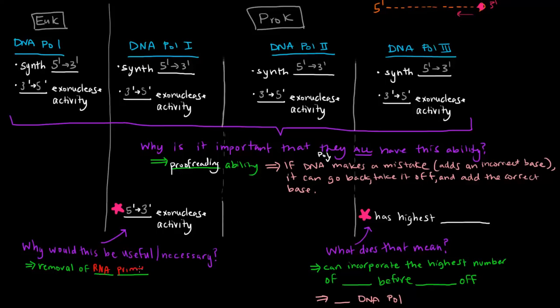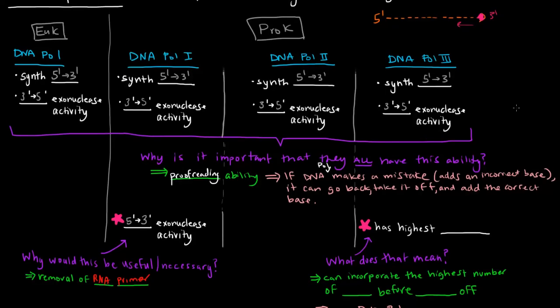So recall from the last video that we mentioned that RNA polymerase, or primase specifically, adds an RNA primer at the 5' end, and then DNA polymerase can begin to go.